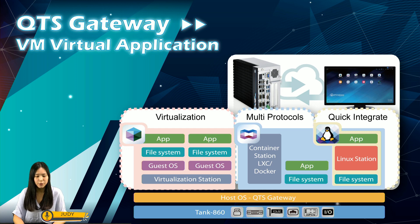The last station in VM virtual application is the Linux Station. Linux Station creates an open-source platform for unlimited potential. QTS Gateway uses advanced virtualization technology to perfectly run both QTS and Linux operating systems in parallel. Just download Linux Station from the APP Center and use any kinds of display ports to output the entire Ubuntu desktop. Add a keyboard and a mouse, just like operating a computer.